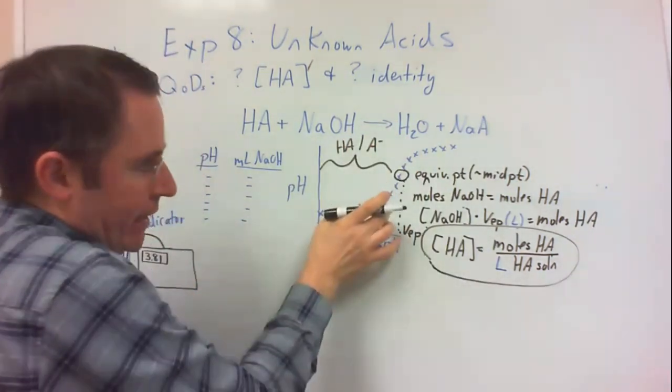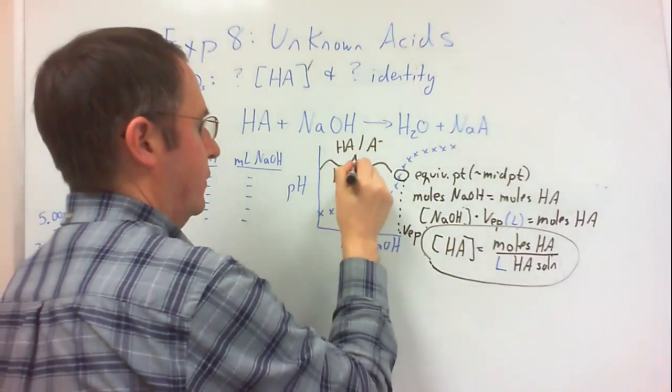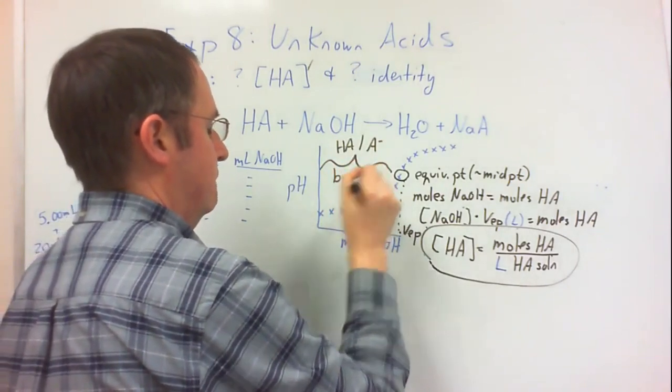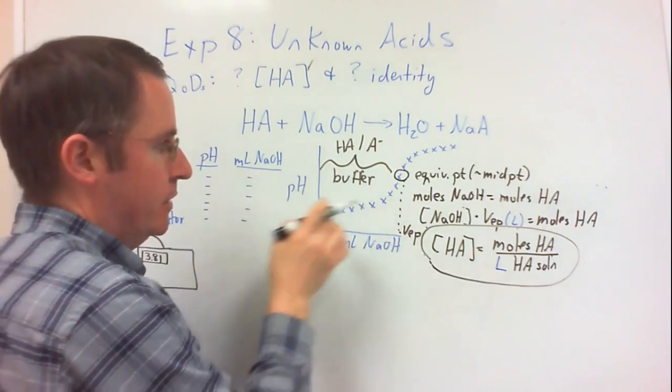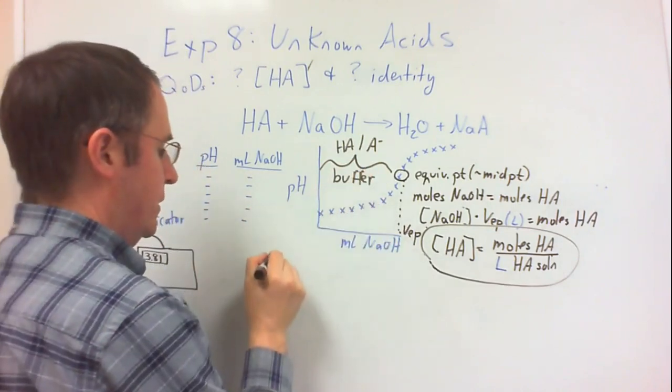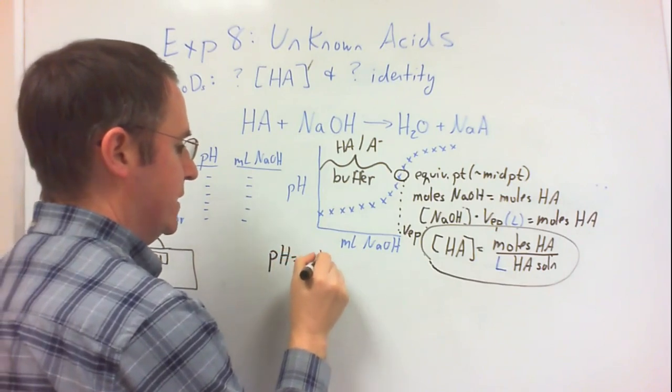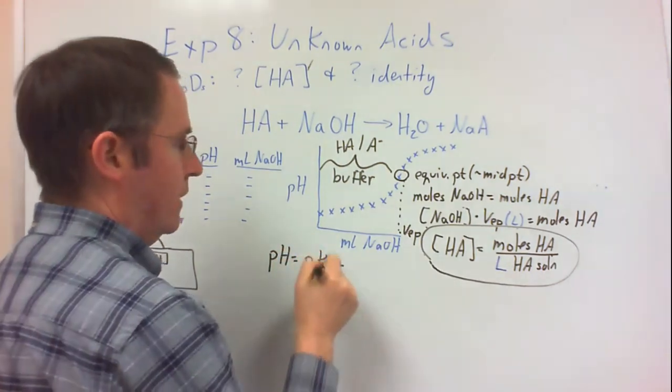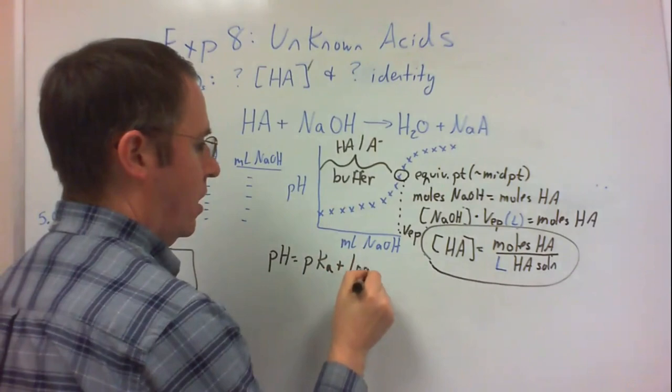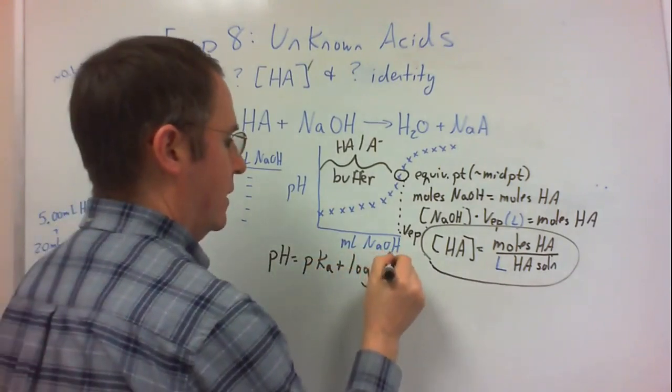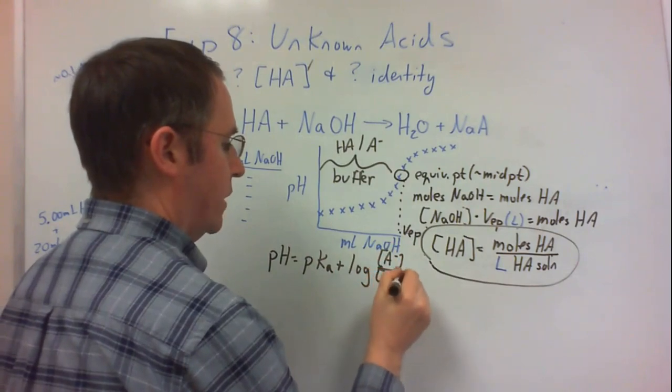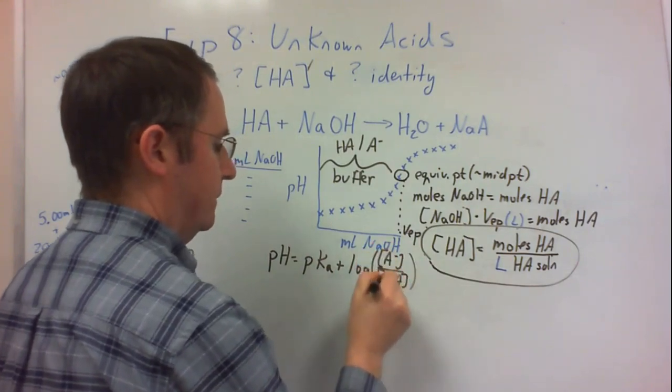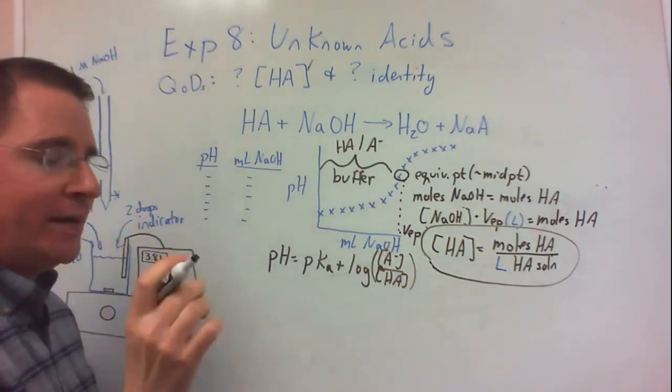Consequently, in this region, we have a buffer, which is why the pH changes but changes very slowly. So because we do have a buffer, the pH of any buffer is equal to the pKa of the weak acid plus the log of the ratio of the molar concentration of the conjugate base to the molar concentration of the weak acid.